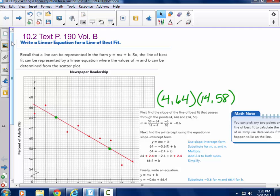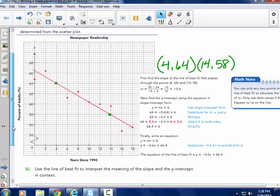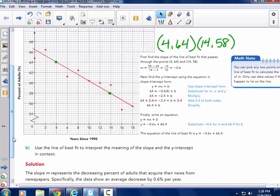Where you find the slope, remember this from our linear unit, find the slope of the line, take two points, and then find the y-intercept and put it into that formula. So this one's done for us. First find the slope of the line of best fit that passes through the points 4, 64 and 14, 58. And I highlighted them here in green.